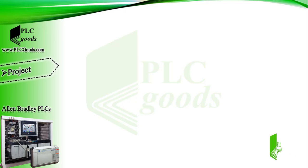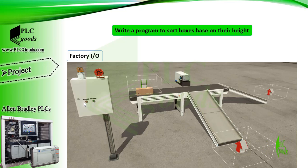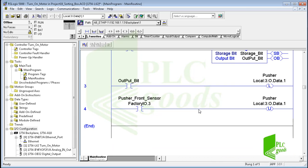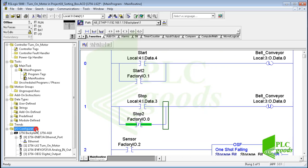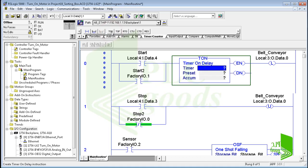Now let's do a simple project using Factory IO software. If you remember, we did the sorting box project in the previous video — now I want to modify it using timers. In this project, if I press the start push button, first the siren alarm should activate for five seconds; after that the belt conveyor and warning light will start. Also, if I press the stop push button, the belt conveyor must be stopped after 10 seconds to move all boxes which are on the belt conveyor. Let me insert an on delay timer and use its done bit to turn on the belt conveyor after five seconds.